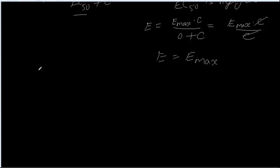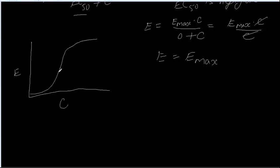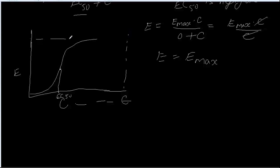So when the concentration is very, very greater than EC50 — looking at the graph here — when the concentration is much greater than EC50, somewhere around here, the effect will be Emax.